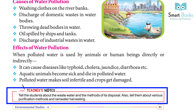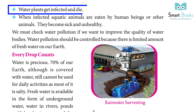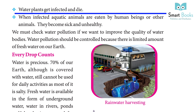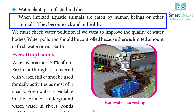Water plants get infected and die. When infected aquatic animals are eaten by human beings or other animals, they become sick and unhealthy.